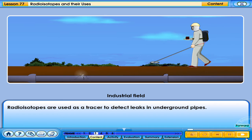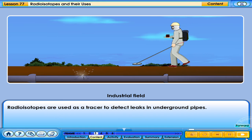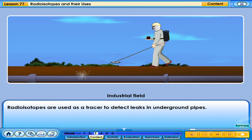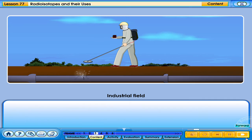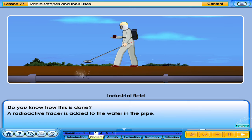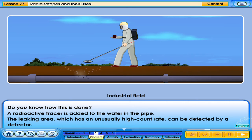Radioisotopes are used as a tracer to detect leaks in underground pipes. A radioactive tracer is added to the water in the pipe, and the leaking area, which has an unusually high count rate, can be detected by a detector.